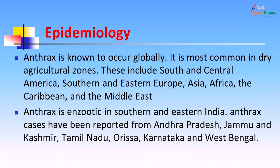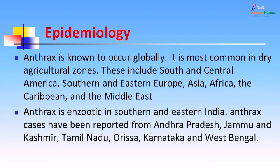Looking at the epidemiology of anthrax: it occurs globally and has not vanished. It is most common in dry agricultural zones, including South and Central America, South and Eastern Europe, Asia, Africa, the Caribbean, and the Middle East; it has not been commonly reported from the United Kingdom. In India, anthrax is enzootic in certain states, specifically the southern and eastern states. Cases have been reported from Andhra Pradesh, Jammu and Kashmir, Tamil Nadu, Orissa, Karnataka, and West Bengal.